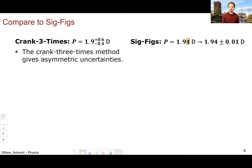A couple of things to note, the crank three times method gives us asymmetric uncertainties like we already saw. And in this particular case, that is, we think, a benefit. Whereas the sig fig rules will always give you symmetric uncertainties. The sig fig rules assume the last digit is uncertain. And so by construction, the uncertainties are always symmetric.